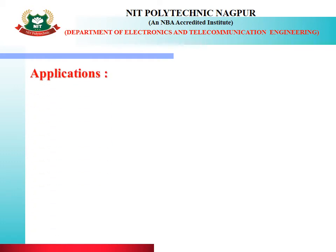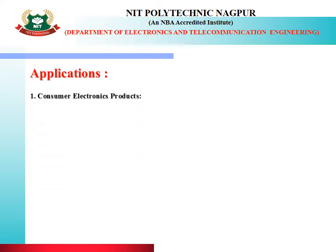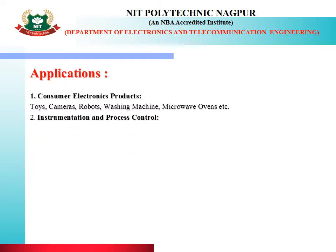What are the applications of microcontroller 89C51? Microcontroller 89C51 is used in domestic appliances such as consumer electronic products, toys, cameras, robots, washing machines, microwave ovens, etc. It is also used in instrumentation and process control, for example oscilloscope, multimeter, leakage current tester.